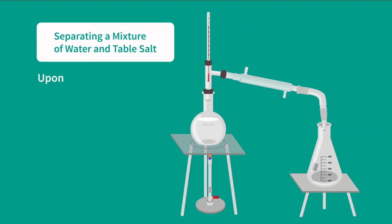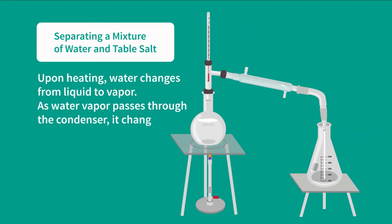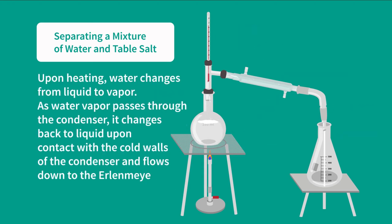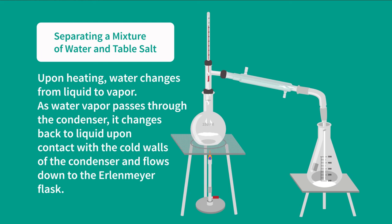Upon heating, water changes from liquid to vapor. As water vapor passes through the condenser, it changes back to liquid upon contact with the cold walls of the condenser and flows down to the Erlenmeyer flask.